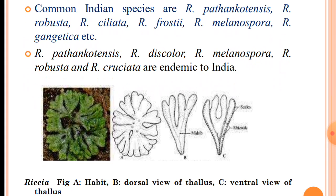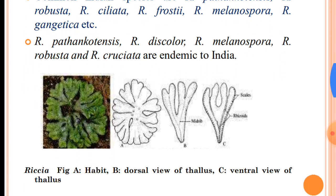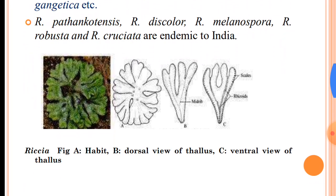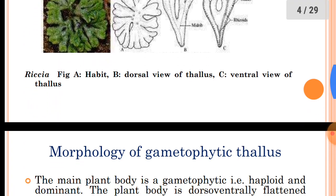Riccia pathankotensis, Riccia discolor, Riccia melanospora, Riccia robusta, and Riccia cruciata are endemic to India — that is, these species are found only in India; they are restricted to India.